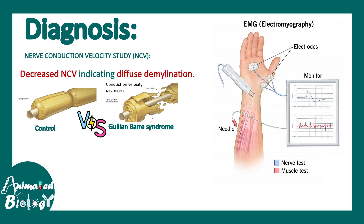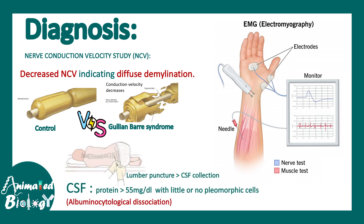You can also perform a lumbar puncture to collect CSF. In that CSF, you will see an increase in the level of proteins, particularly albumin, whereas there are almost no pleocytic cells. This phenomenon of increased protein and absent or negligible cells is known as albuminocytological dissociation.